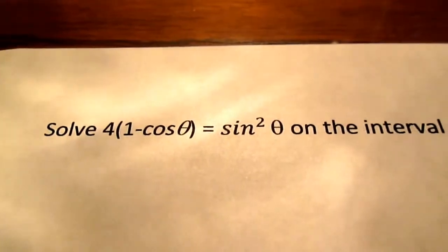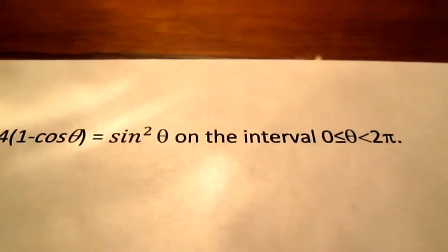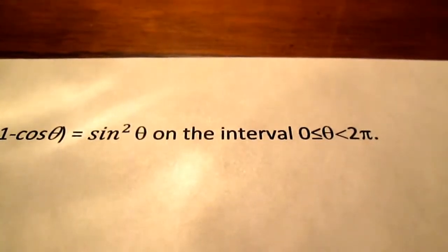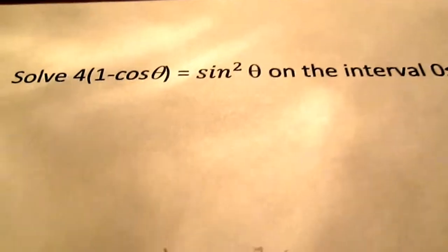Solve 4 times 1 minus cosine theta equals sine squared theta on the interval 0 is greater than or equal to theta which is greater than 2 pi. First thing I like to do is rewrite the question.